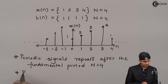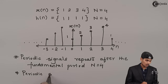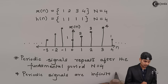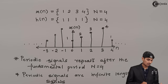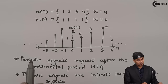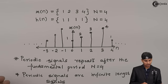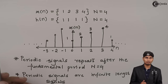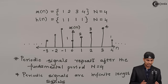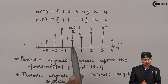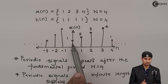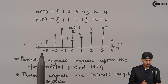Periodic signals are infinite length signals. As we can see, the periodic signal will always repeat itself, so if we put n equal to minus infinity or n equal to plus infinity we will always have a sample. Periodic signals are infinite in length and repeat after a fundamental period. For N equal to 4, after the fourth sample the fifth sample will be the same as the first, and so on in both directions of n.